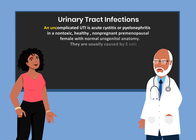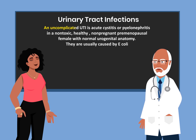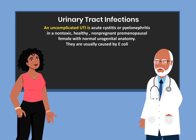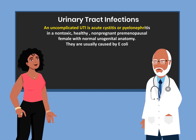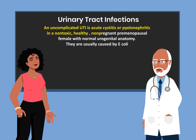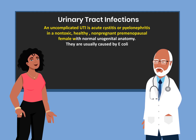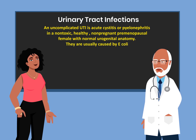An uncomplicated urinary tract infection is acute cystitis or pyelonephritis in a non-toxic, healthy, non-pregnant, premenopausal female with normal urogenital anatomy. These are usually caused by E. coli.